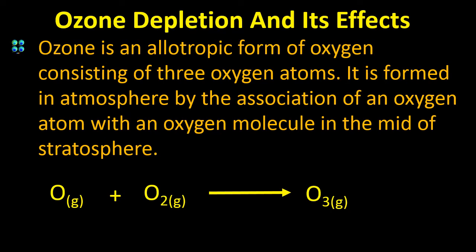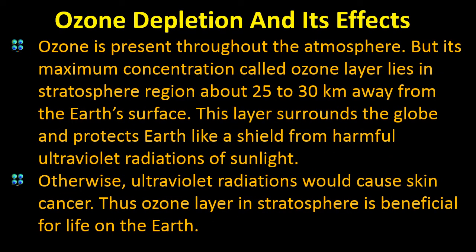Ozone is an allotropic form of oxygen consisting of three oxygen atoms. It is formed in the atmosphere by the association of an oxygen atom with an oxygen molecule. It is present in the middle of the stratosphere, and the next important question is: why is ozone depleting and what are its effects?